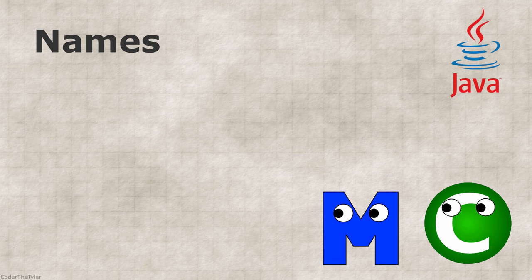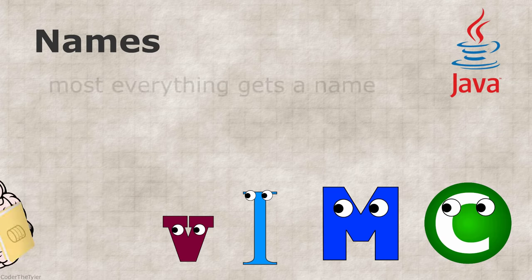We give names to classes, to methods, to interfaces, to variables, and pretty much everything else.